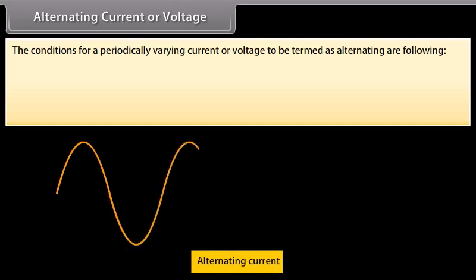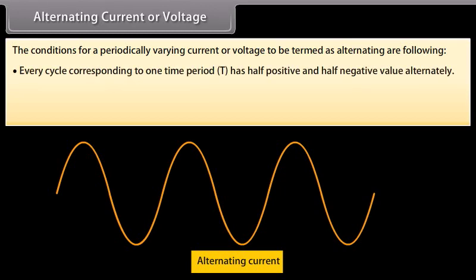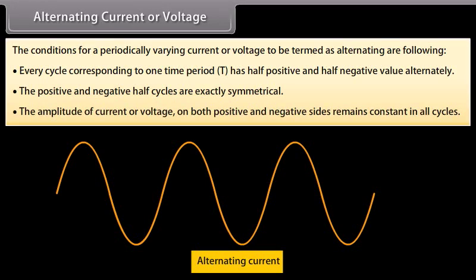The conditions for a periodically varying current or voltage to be termed as alternating are following: every cycle corresponding to one time period has half positive and half negative value alternately. In case of current, it means that direction of current reverses after every half cycle, and in case of voltages, it means that the polarity of potential difference reverses after every half cycle. The positive and negative half cycles are exactly symmetrical.